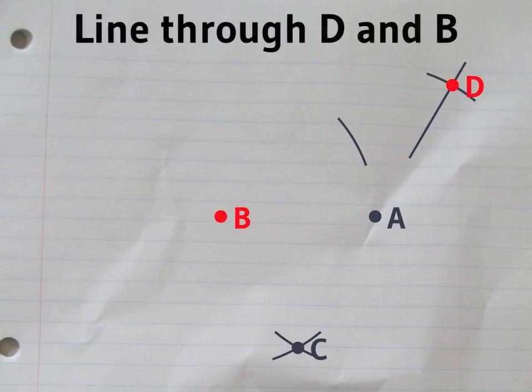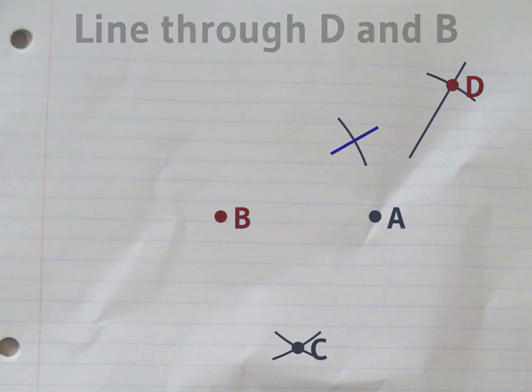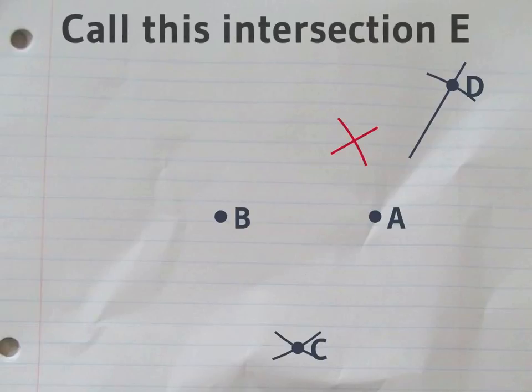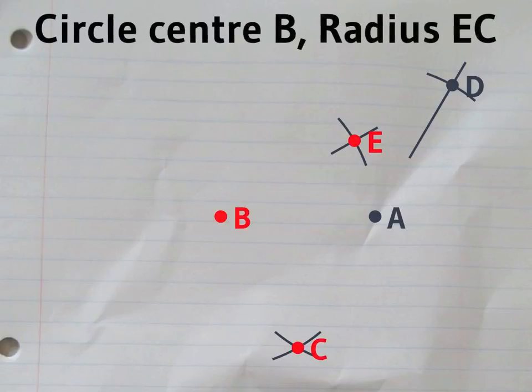Now draw the line through B and D. That line meets the second circle you drew at a point we will call E. The angle E-B-C is actually a right angle.